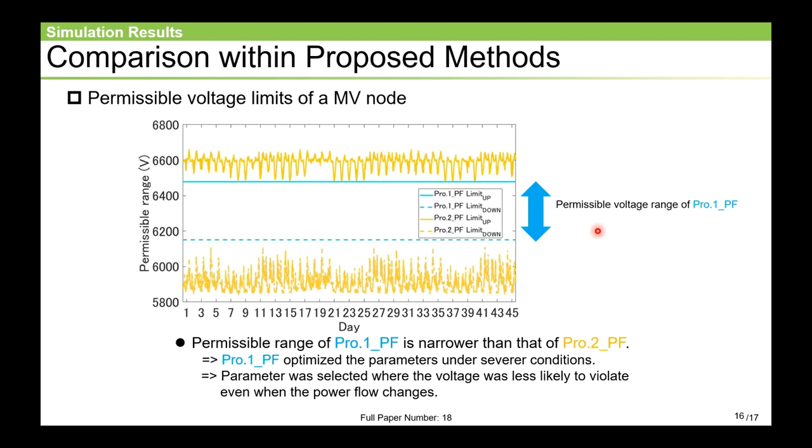Finally, we will discuss why the method using only the minimal and maximal values was able to reduce the voltage violation amount at all LV consumers. This graph shows the permissible voltage range of the MV nodes determined in step A. The area between dotted and solid line is the permissible voltage range of each method. From this graph, we can see that the permissible voltage range of PRO1_PF is narrower than PRO2_PF. In other words, the parameters of PRO1_PF were determined under severe conditions. Therefore, PRO1_PF was able to select parameters that are less likely to violate even if real conditions are different from those of data acquisition period.